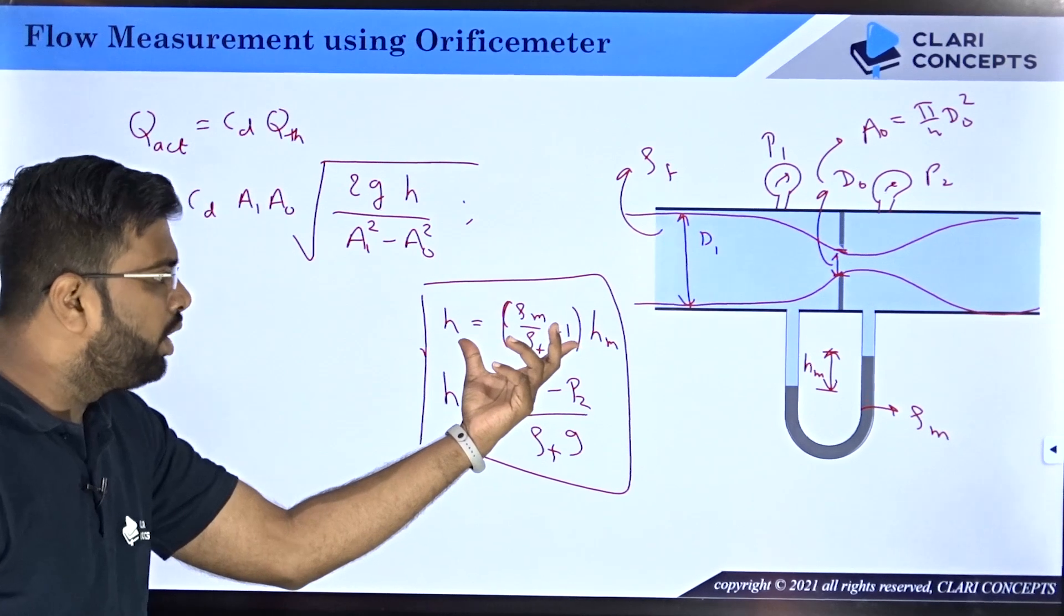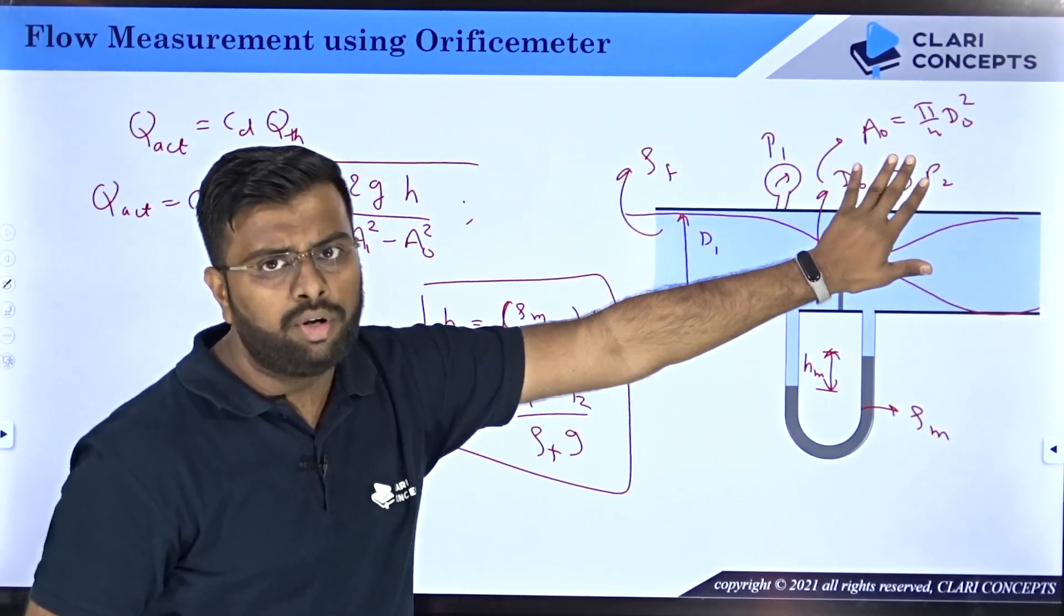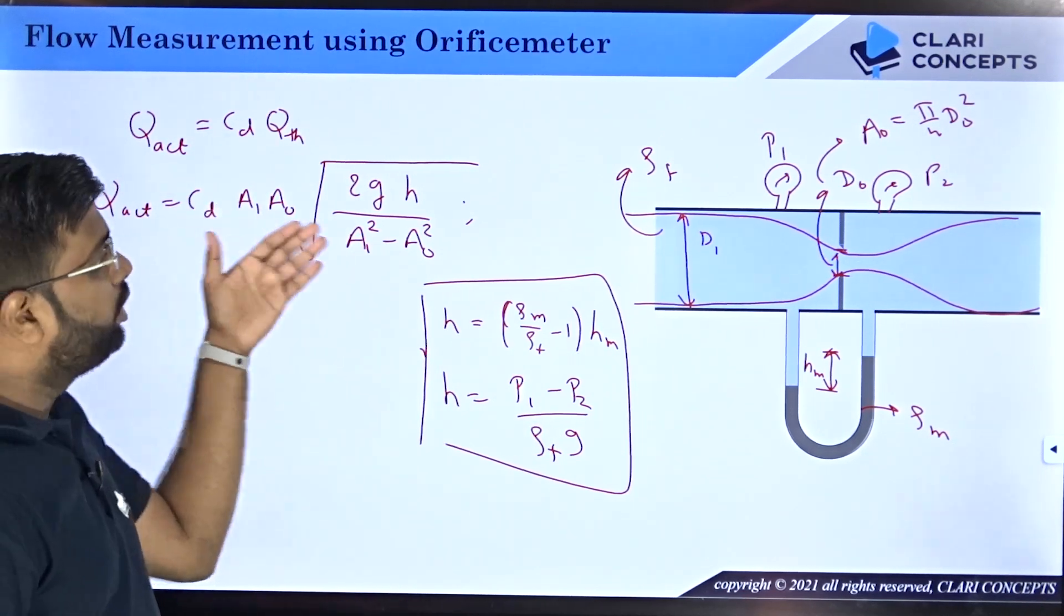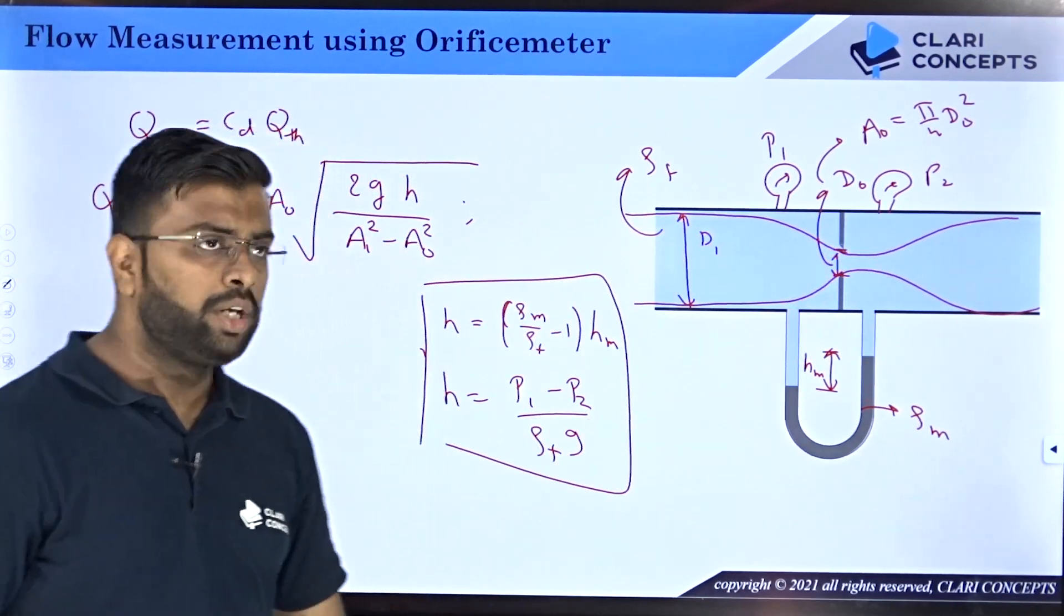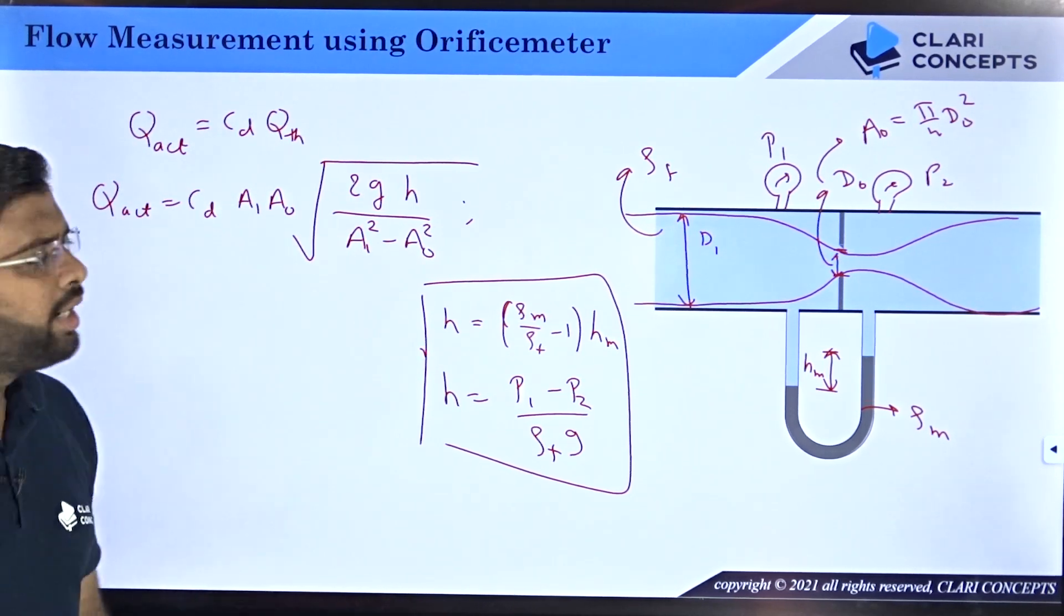When U-tube manometer is given to you, you can use this formula to calculate actual flow rate wherein this h will be this particular value. If pressure gauges directly are mounted and pressures are given to you, you can use this formula to get the flow rate of the fluid flowing through this pipe using the orifice meter.